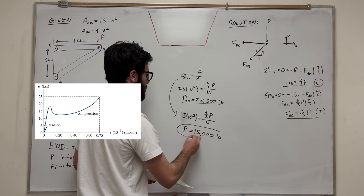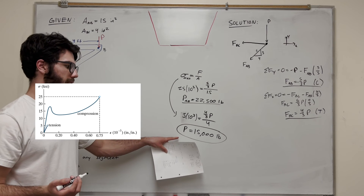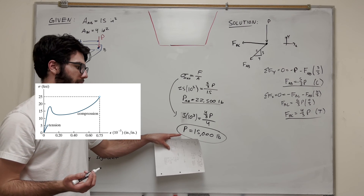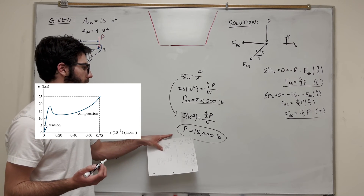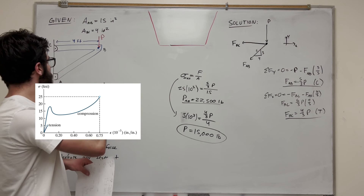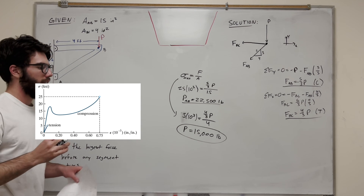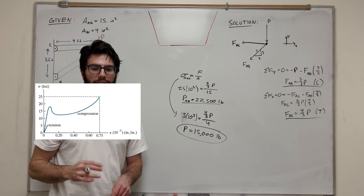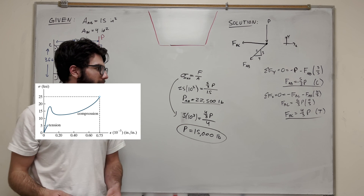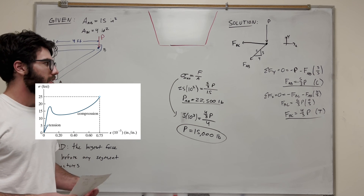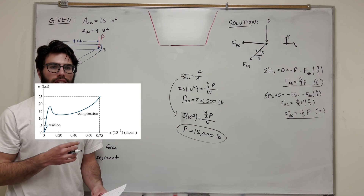This P of 1,500 pounds is less than the 22,500 pounds from AB. Because BC breaks at a lower applied force, it's the determining member — BC is going to break first. That's how you solve this problem; not too tricky. Just make sure you draw that free body diagram. If you have any questions, check out my channel and ask them in the comments below — see you in the next one.